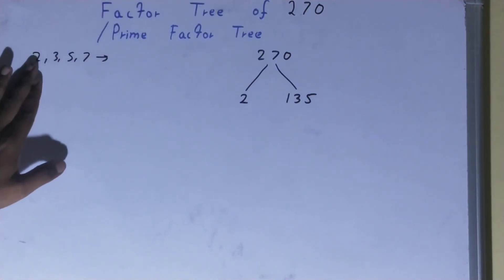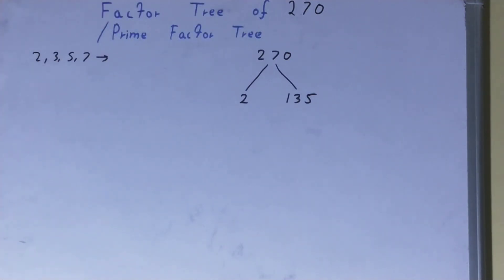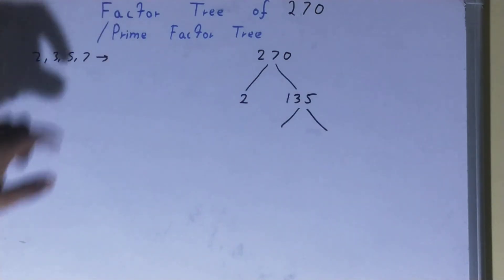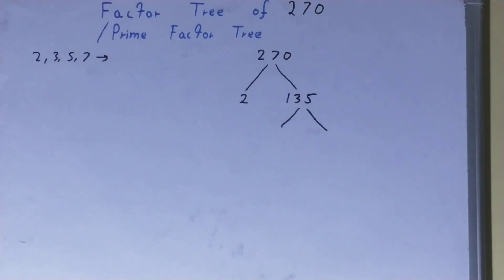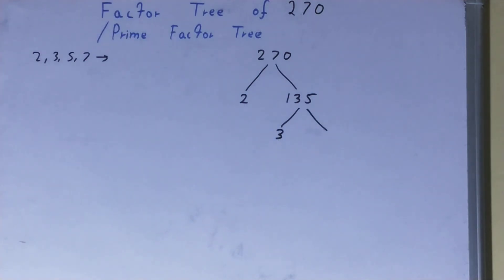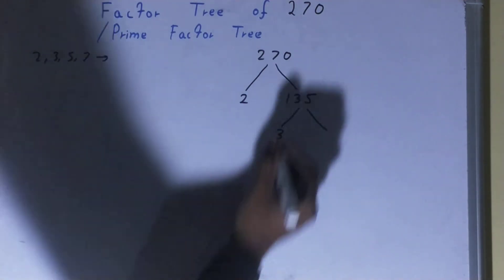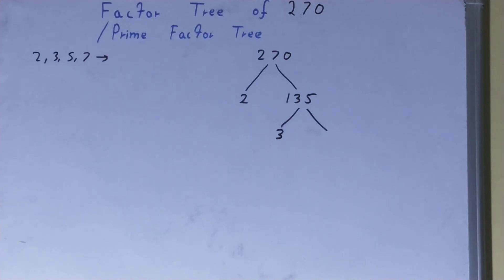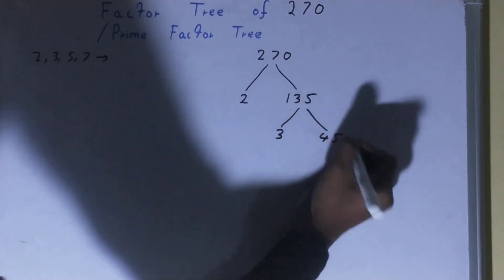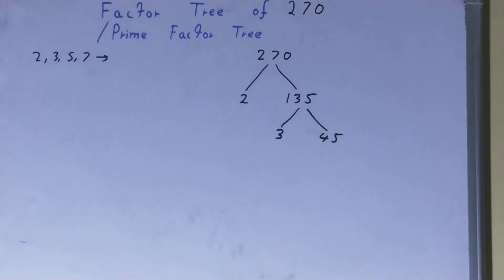We check: is 135 divisible by 2? No. Is it divisible by 3? Yes. So one of the numbers will be 3, and the other will be whatever we get after dividing. 135 divided by 3 gives us 45. Now do we need to factorize this 45 also? Yes, because this is also a composite number.